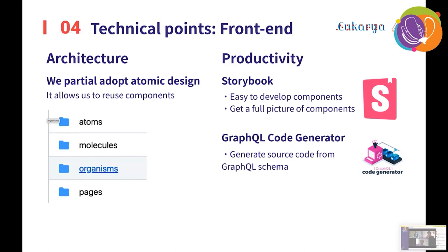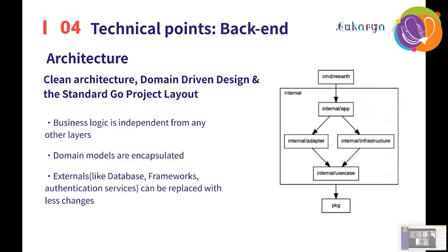The GraphQL code generator generates React Hooks code and type definitions automatically from the GraphQL schema, so we don't need to write lots of boilerplate source code. And this is the backend architecture. The backend architecture is based on clean architecture, domain-driven design, and the standard Go project layout.